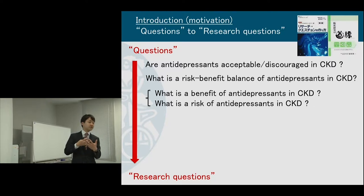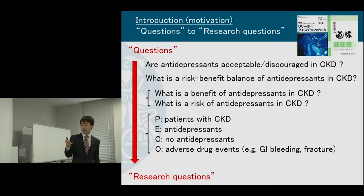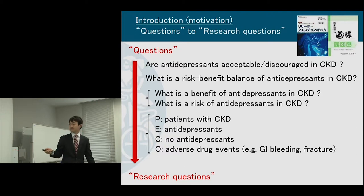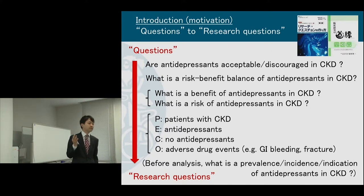Especially among patients with kidney disease, who are often excluded from clinical trials. By focusing on the risk side of antidepressants, this became my PECO: among patients with CKD, comparing antidepressants versus no antidepressants on adverse drug events such as GI bleeding and fracture. This is the research question in my second paper. Before that, I was also interested in basic statistics — what is the prevalence, incidence, and indication of antidepressants — as a drug utilization study, which became my first paper.